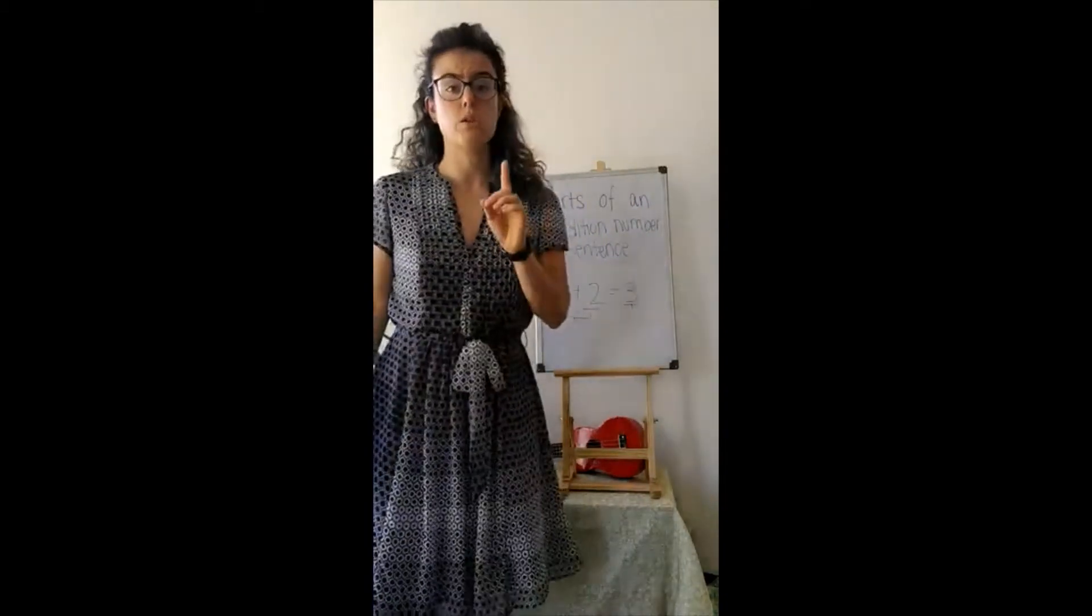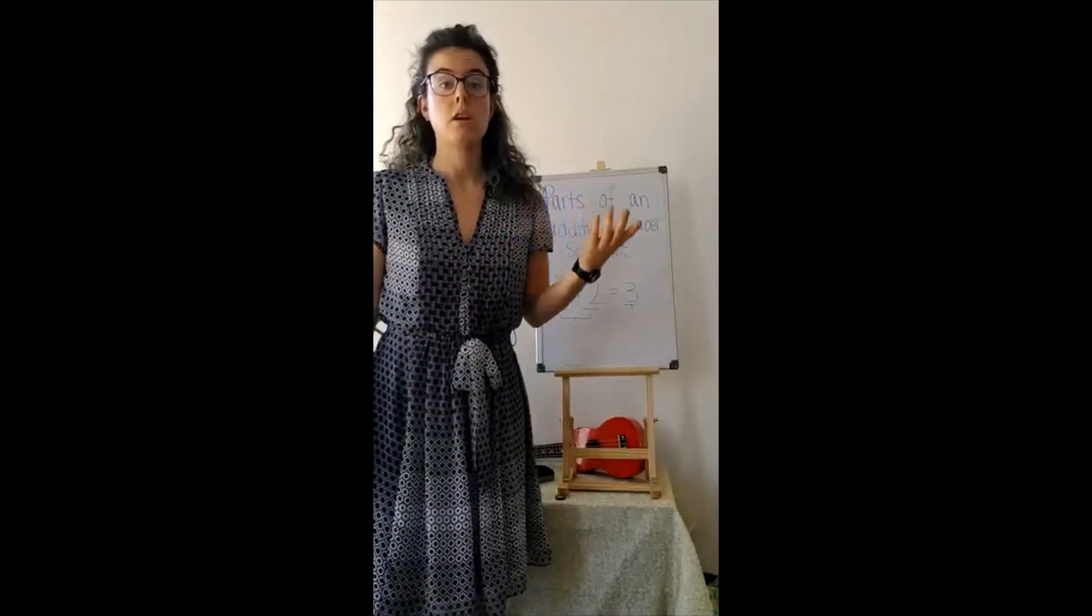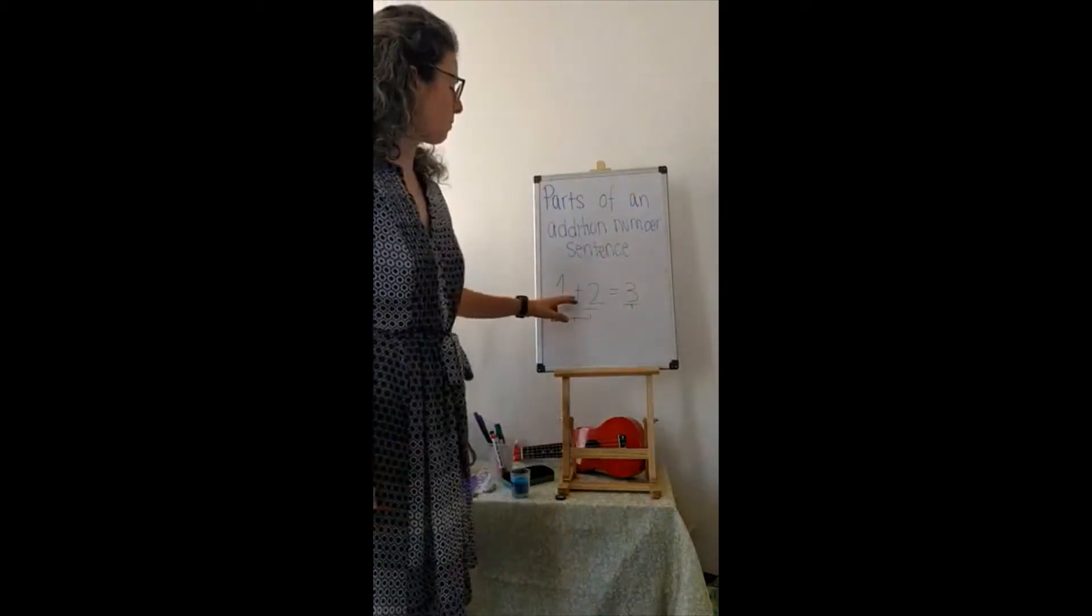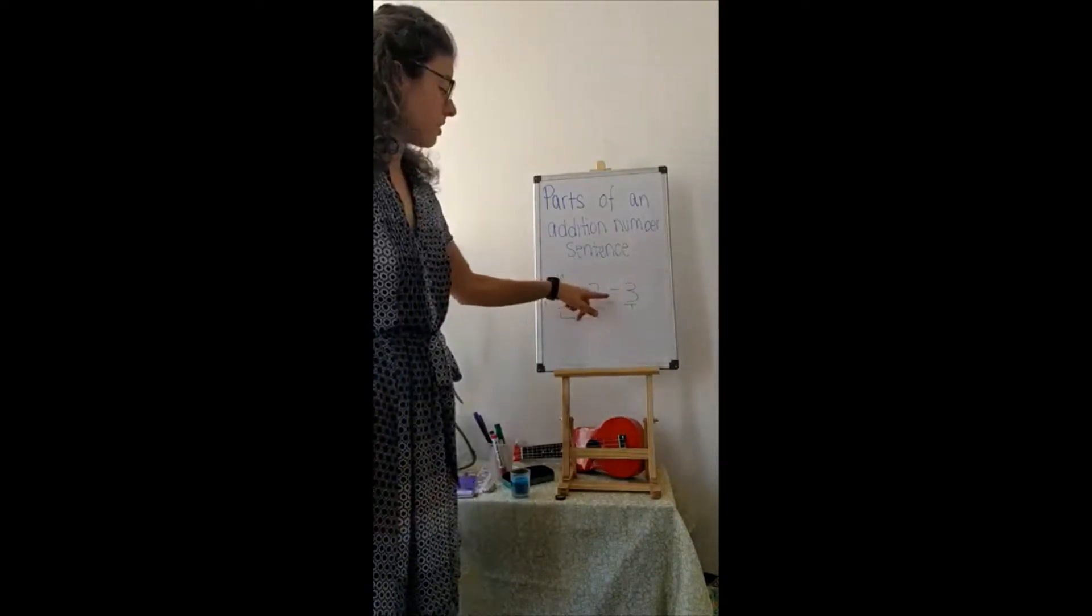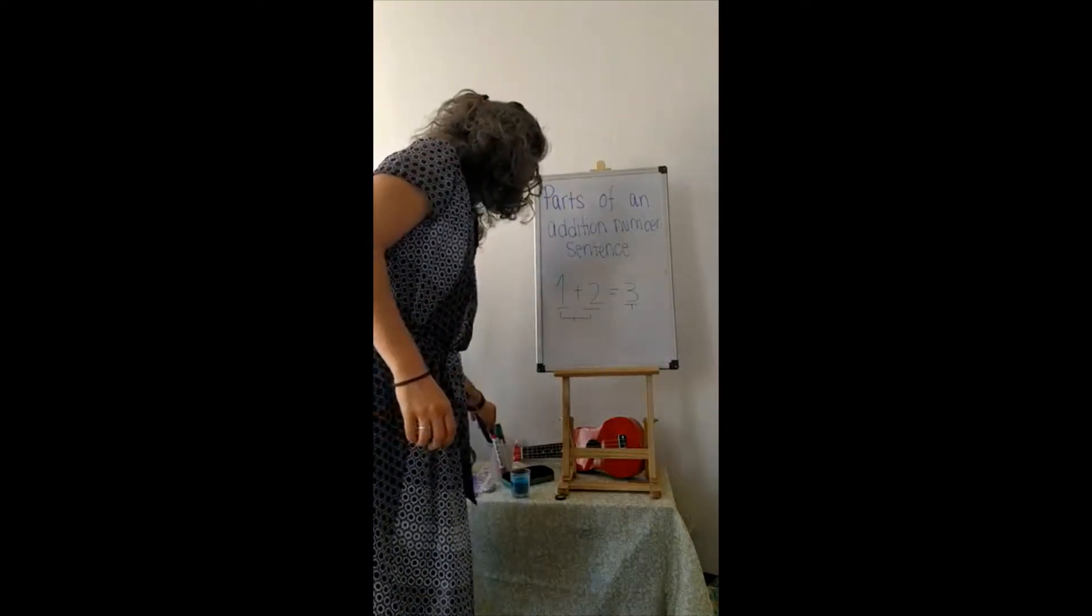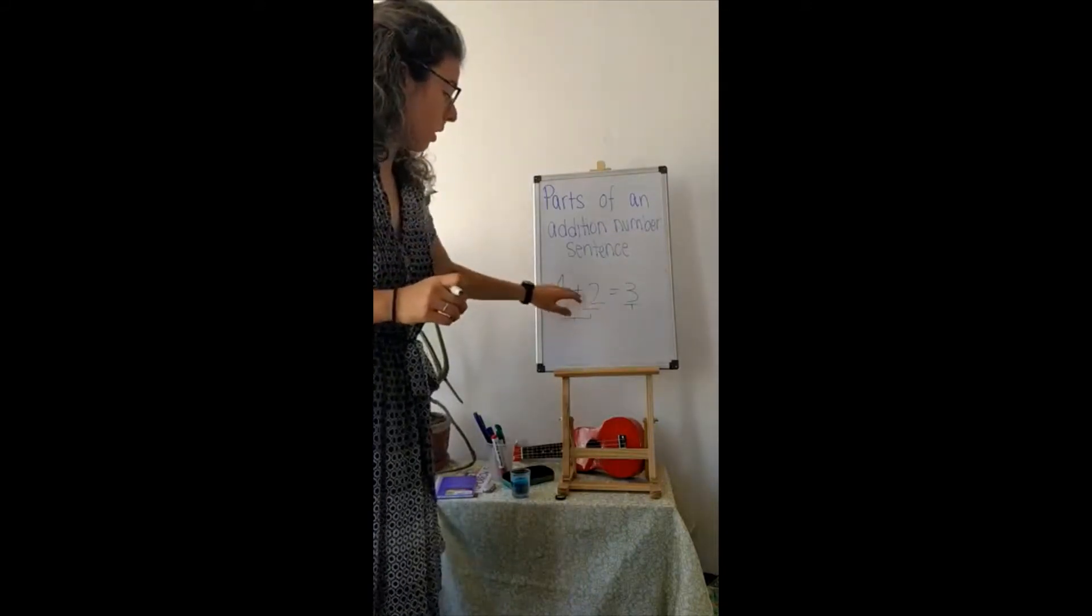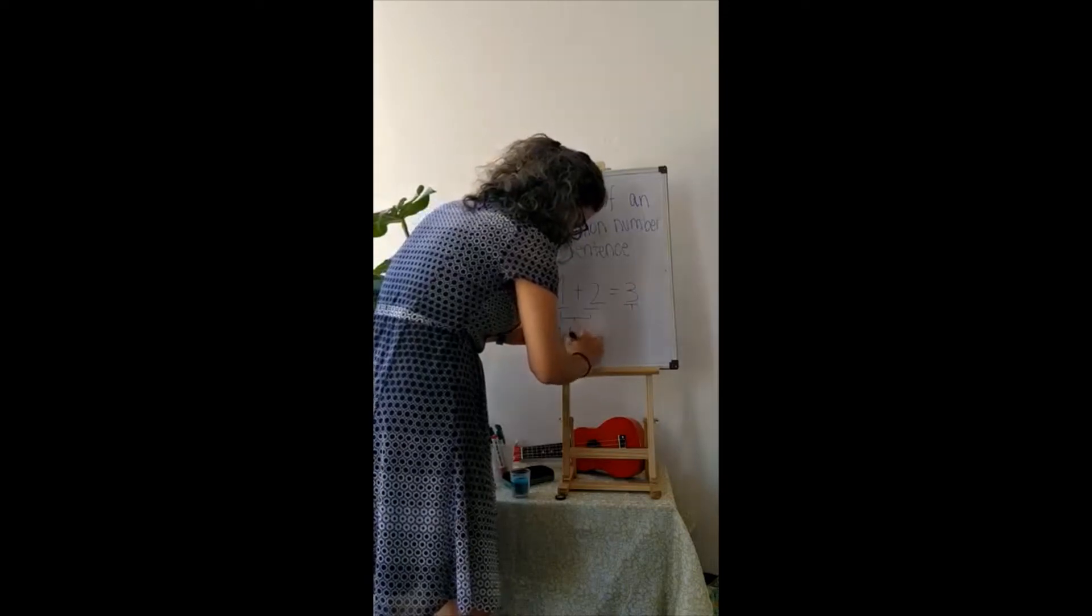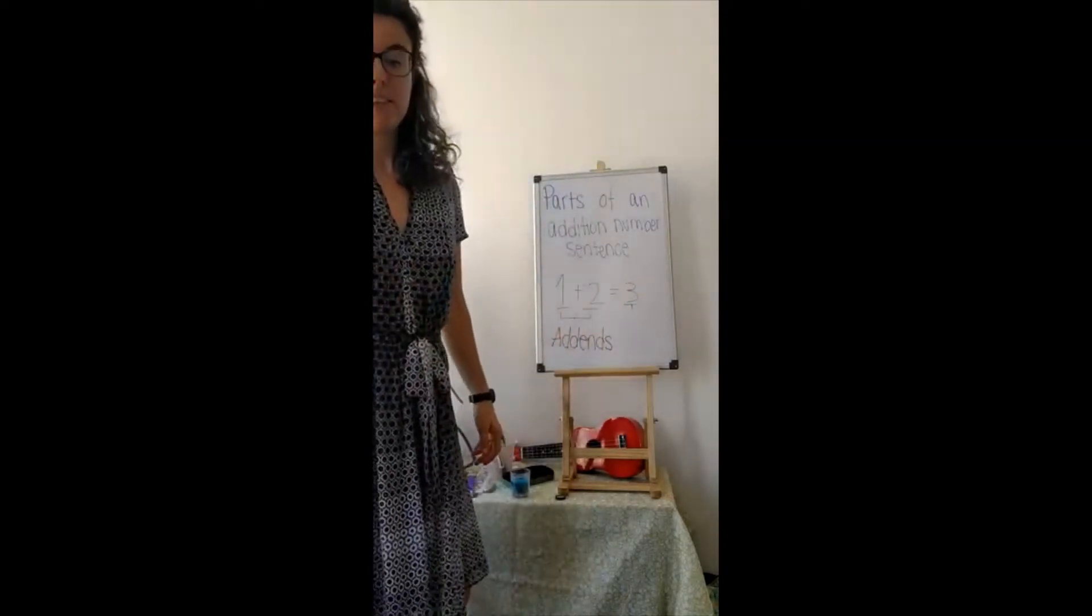The first thing you need to know are what we call the different parts of an addition number sentence. So remember, this is our number sentence. One plus two equals three. But these numbers and this number have names. We call them the different parts of the sentence. So these two numbers are the addends.